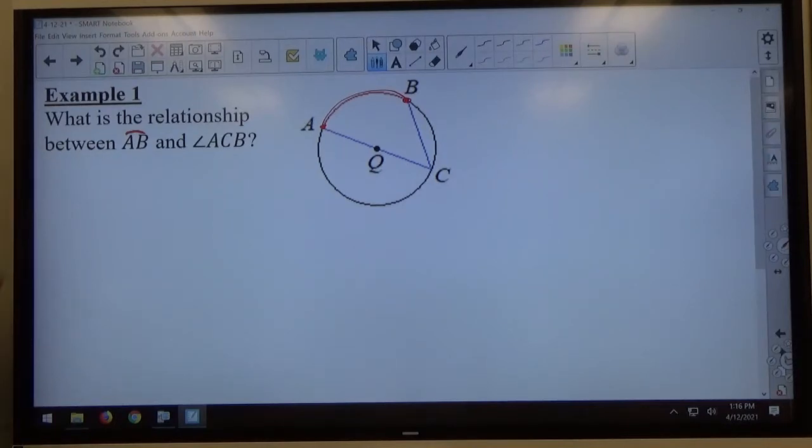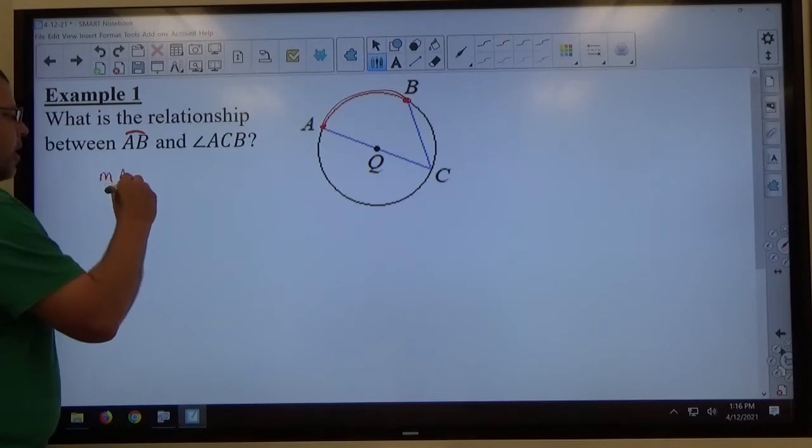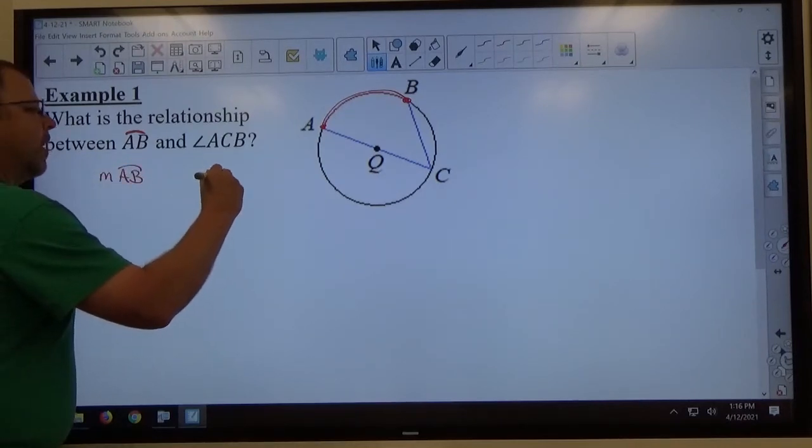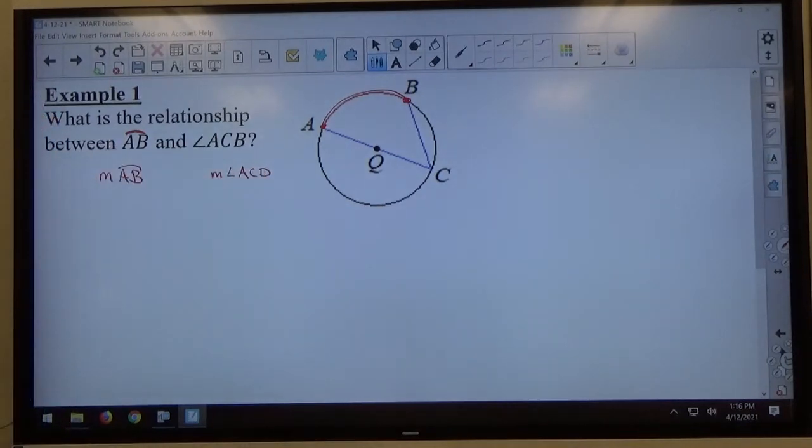When it asks for the measure of AB, which is what I'm going to be dealing with, the measure of arc AB versus the measure of angle ACB, that's going to be the relationship - is there some relationship in the two measures of these things.